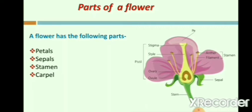Carpel. The carpel is the female reproductive part of the flower. It consists of the ovary, style, and stigma. The egg is present in the ovary. At the top of the ovary is a vertical structure called the style that supports the stigma. The pistil is the fusion of carpels.